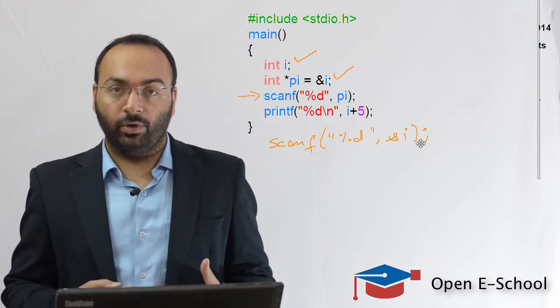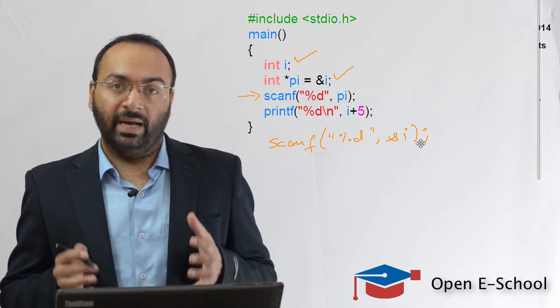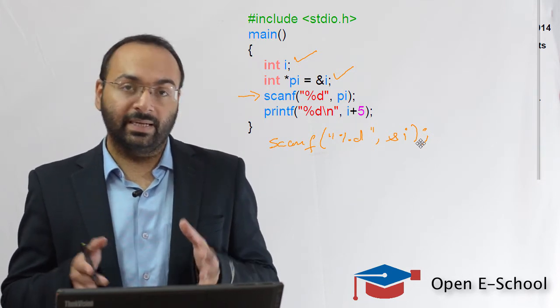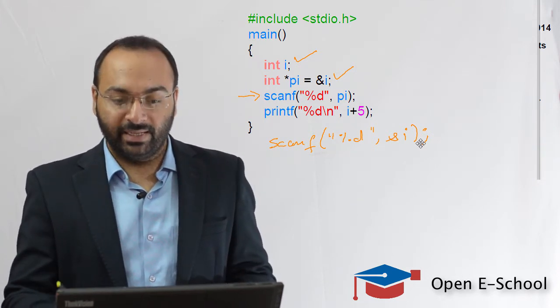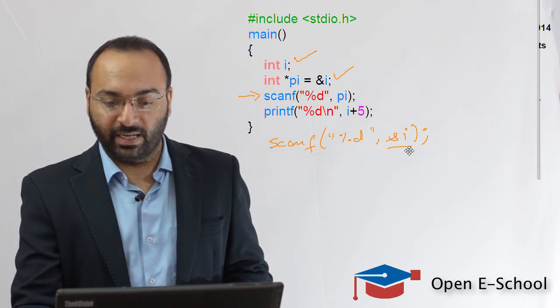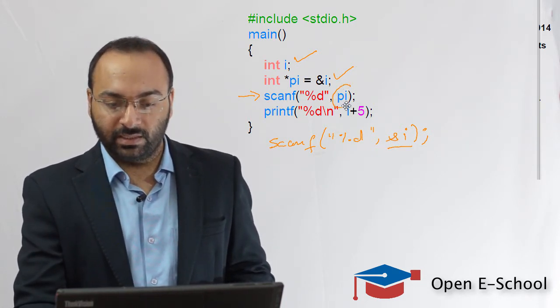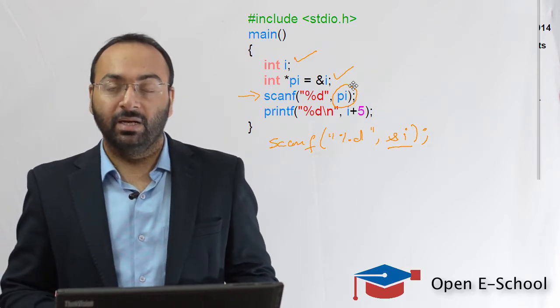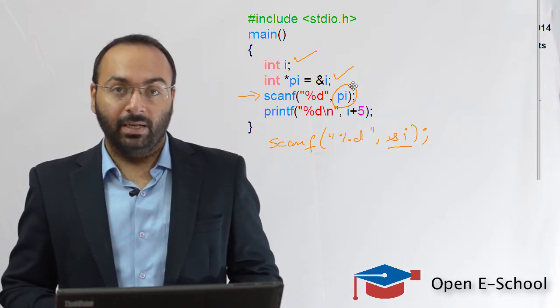Let's say, if I want to store some number inside the variable i, I will simply write scanf percentage d ampersand i. But over here in this line, you can notice that we are not writing ampersand i, we are simply writing pi.